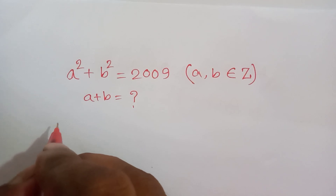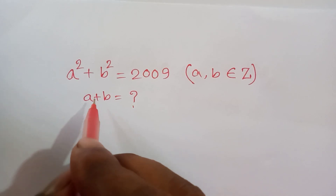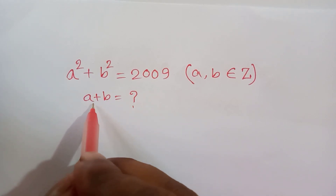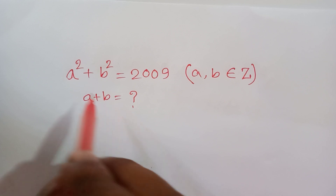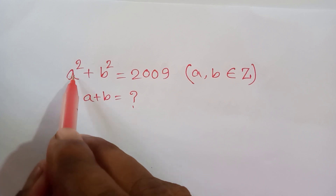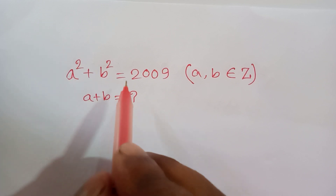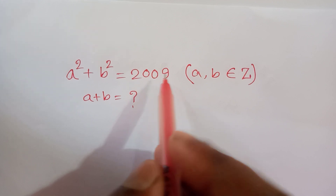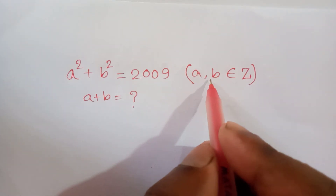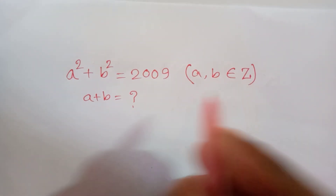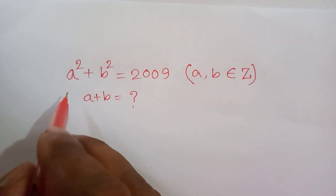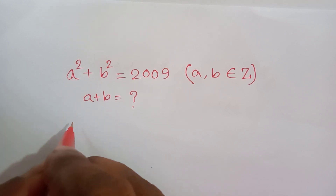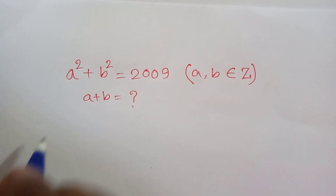Hi everyone, welcome. Solve this math problem: how to find the value of a plus b, where a squared plus b squared is equal to 2019, and a and b are integers. So let's try.